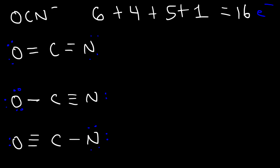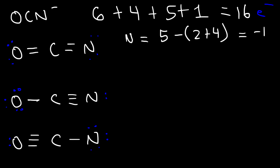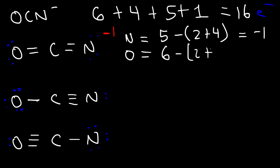To find the most stable structure, we calculate the formal charge of oxygen and nitrogen in each. For the first structure: nitrogen has five valence electrons, two bonds, and four dots — five minus six gives negative one. Oxygen has six valence electrons, two bonds, and four dots — six minus six is zero. Carbon has four valence electrons and four bonds — zero. So in the first structure, nitrogen bears the negative one charge.